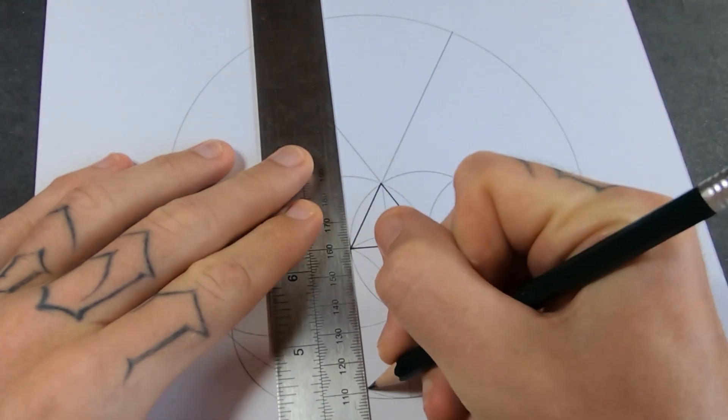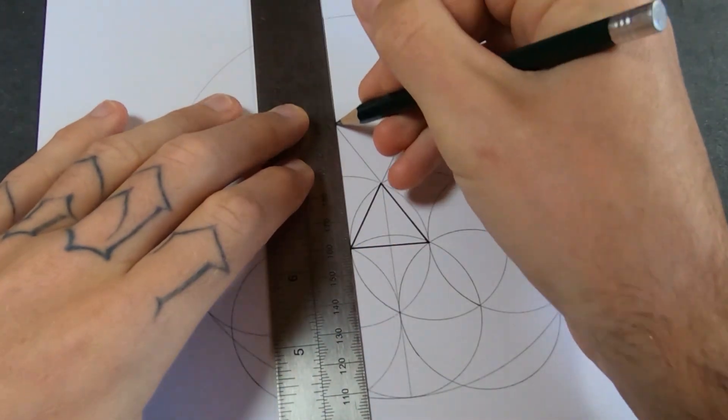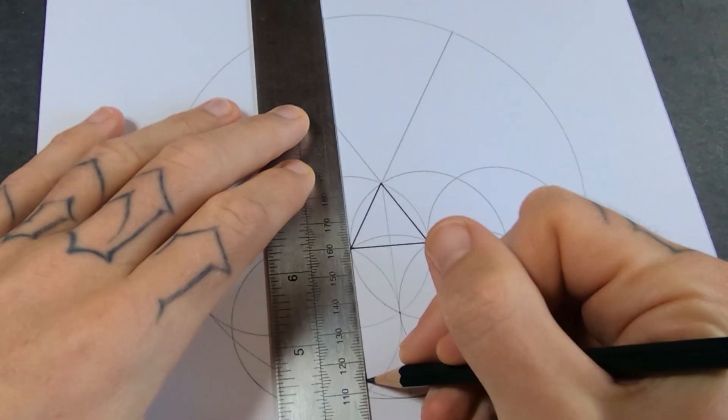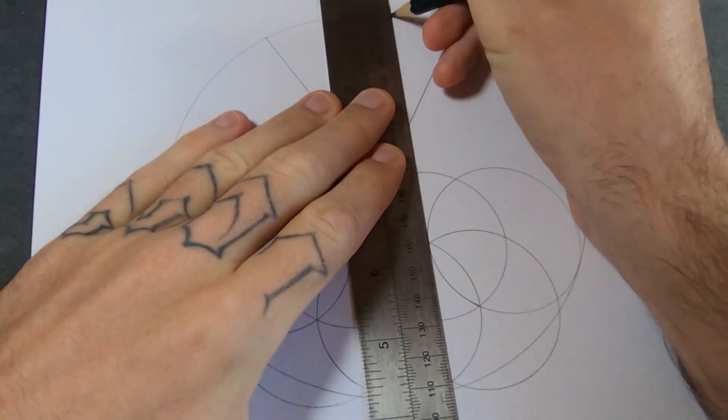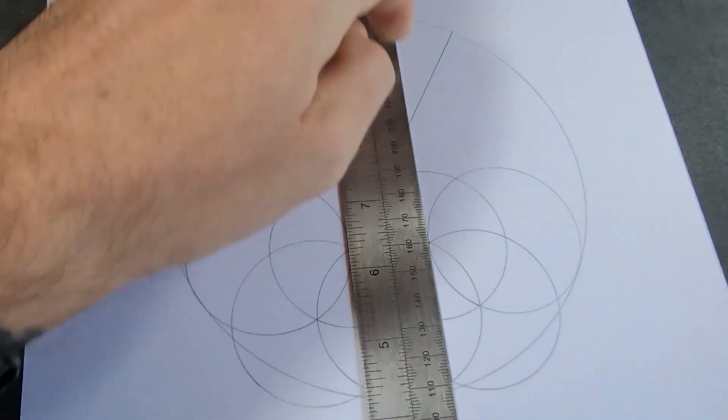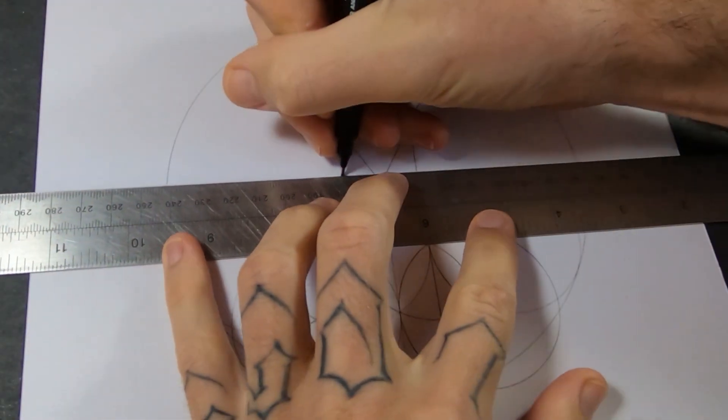I'll use those same points to draw two more vertical lines that will go from top to bottom. And that tells me exactly where the square is.